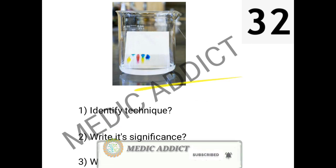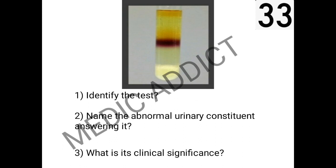The next spot asks us to identify the technique, write its significance, and state the RF value. The technique is paper chromatography, and its significance is that it is used for the separation of amino acids, sugar molecules, peptides, or their mixtures. The RF value is defined as the ratio of the distance moved by the solute — a dye or pigment — to the distance moved by the solvent, both measured from the common origin or baseline. Since RF is a ratio, it has no unit and is a dimensionless quantity.